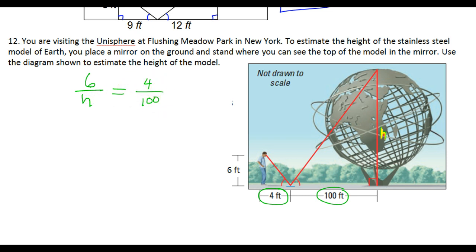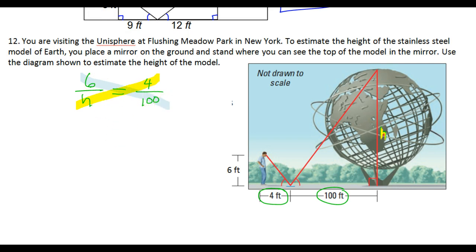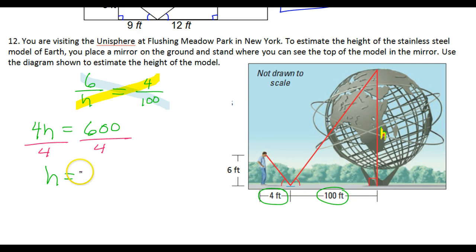So it's just a matter of solving this. So we'll cross multiply. So if we cross multiply, we are looking at these diagonals like this and like this. So in other words, 4 times H, we will just have 4H. 6 times 100 is going to be 600. And then all we have to do is divide both sides by 4. 150. So the height of the Unisphere is 150 feet.